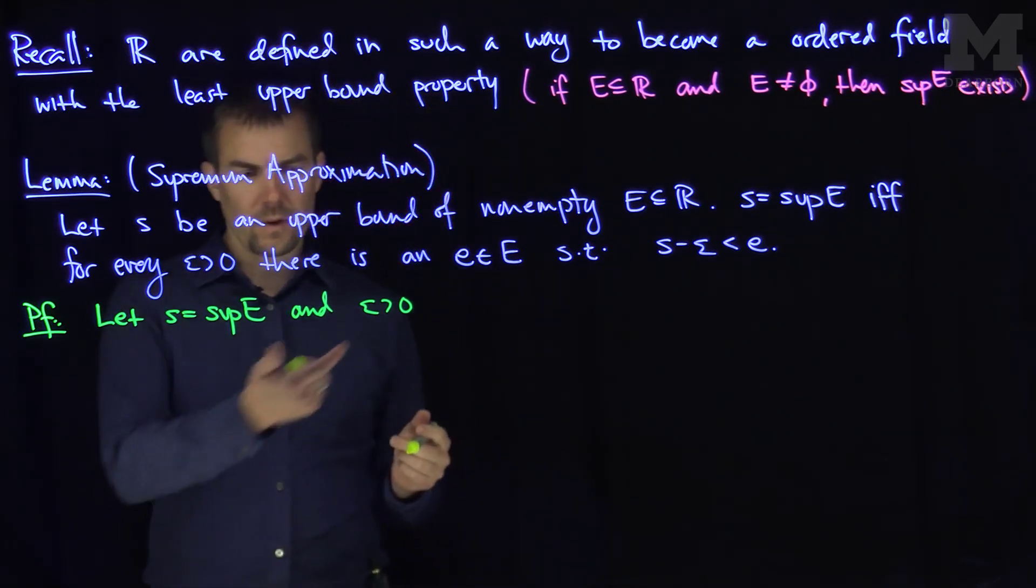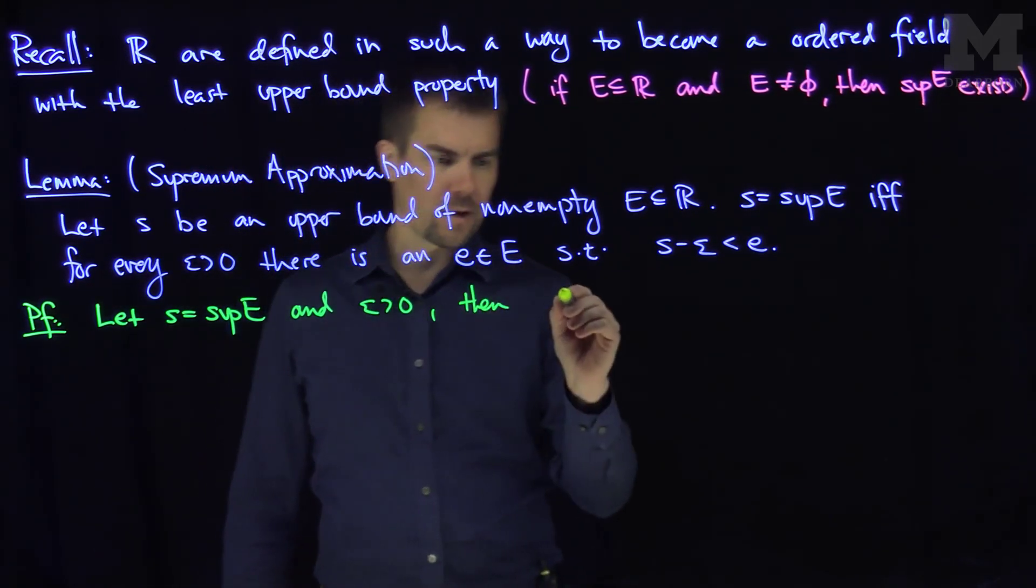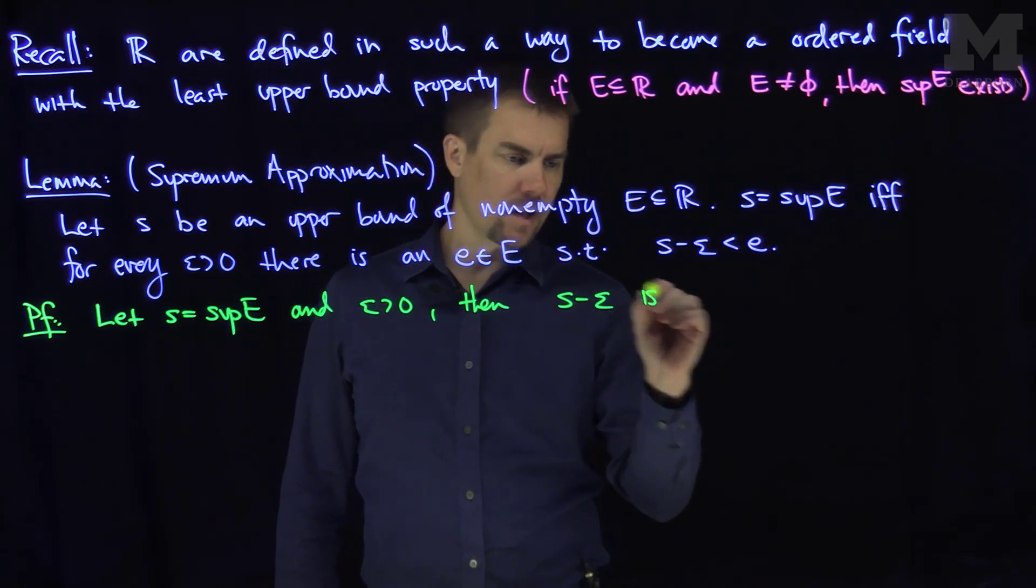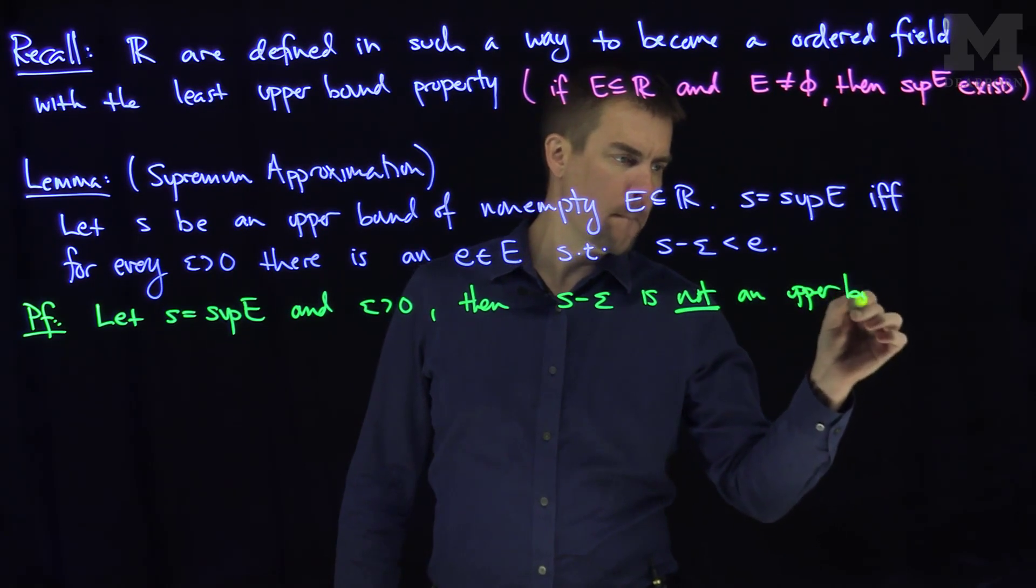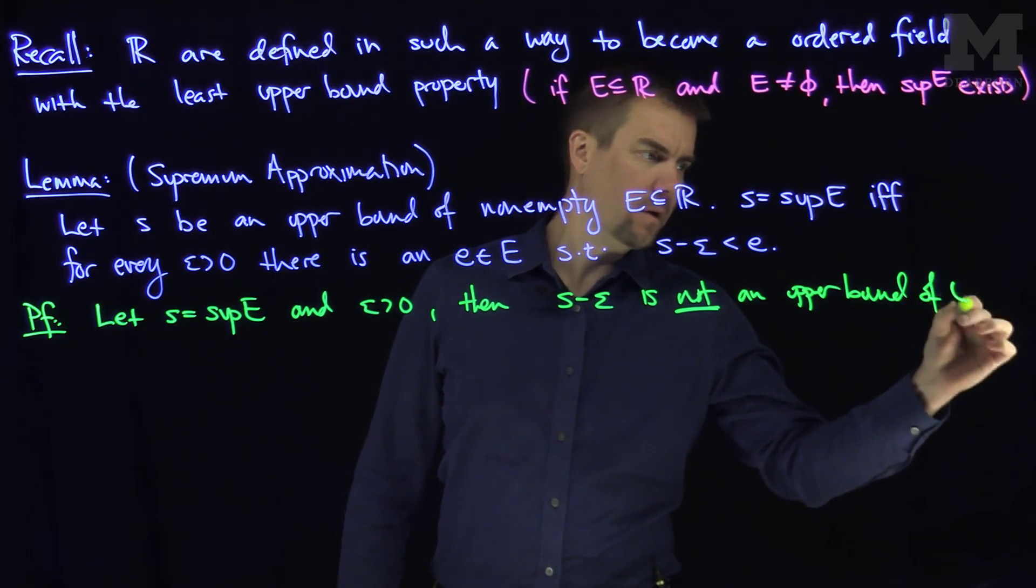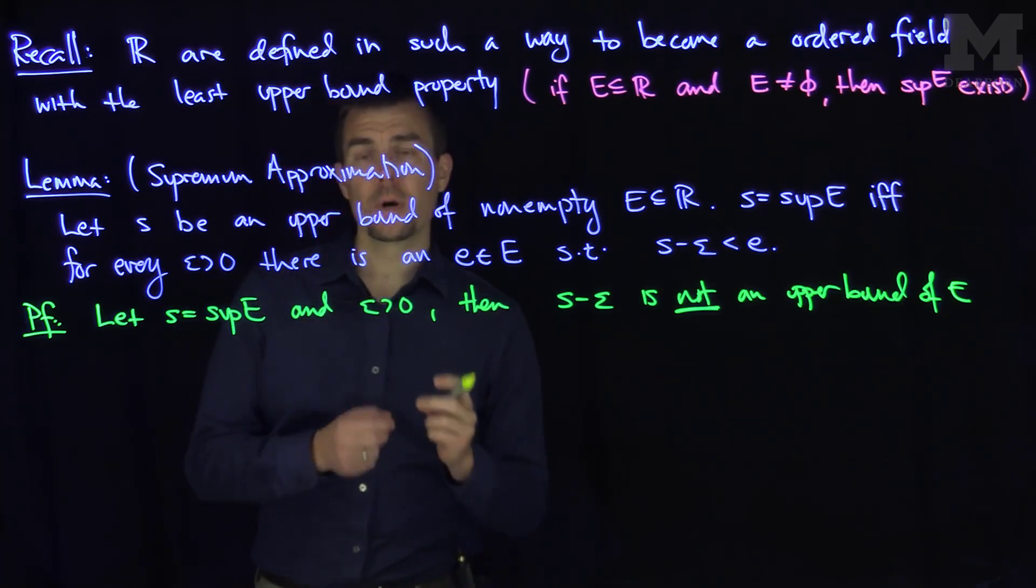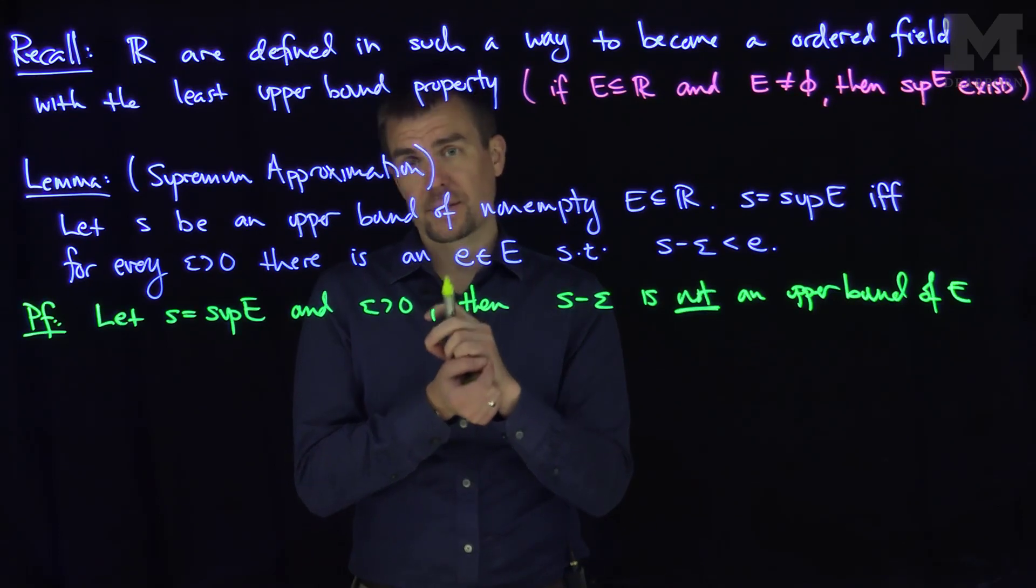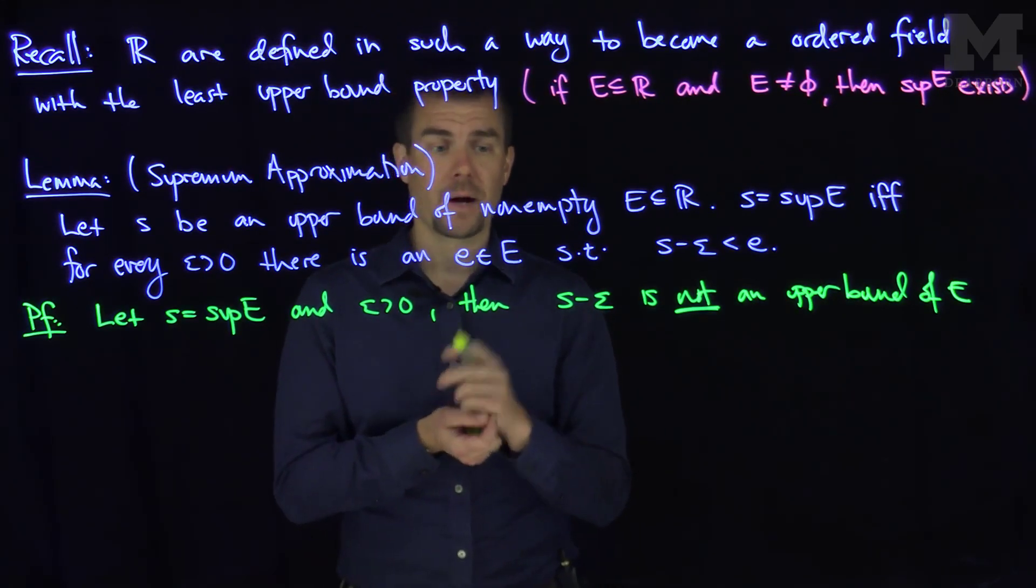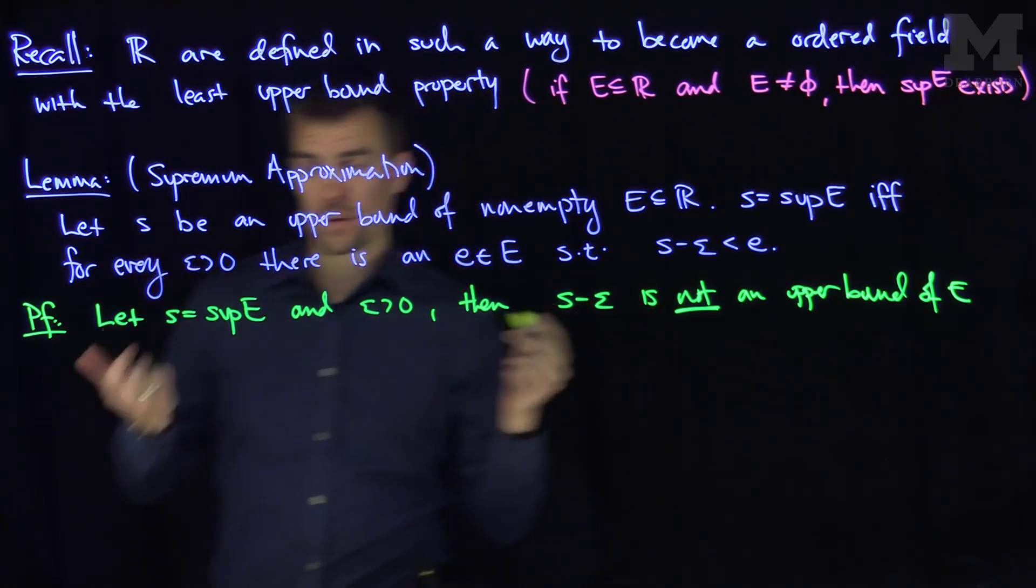If S is the supremum of E and epsilon is greater than zero, then by definition S minus epsilon is not an upper bound of E. Because the supremum is the least upper bound, to be the supremum you have to be an upper bound, and if any value is less than the supremum, it's automatically not an upper bound. S minus epsilon is less than S, so it's not an upper bound.